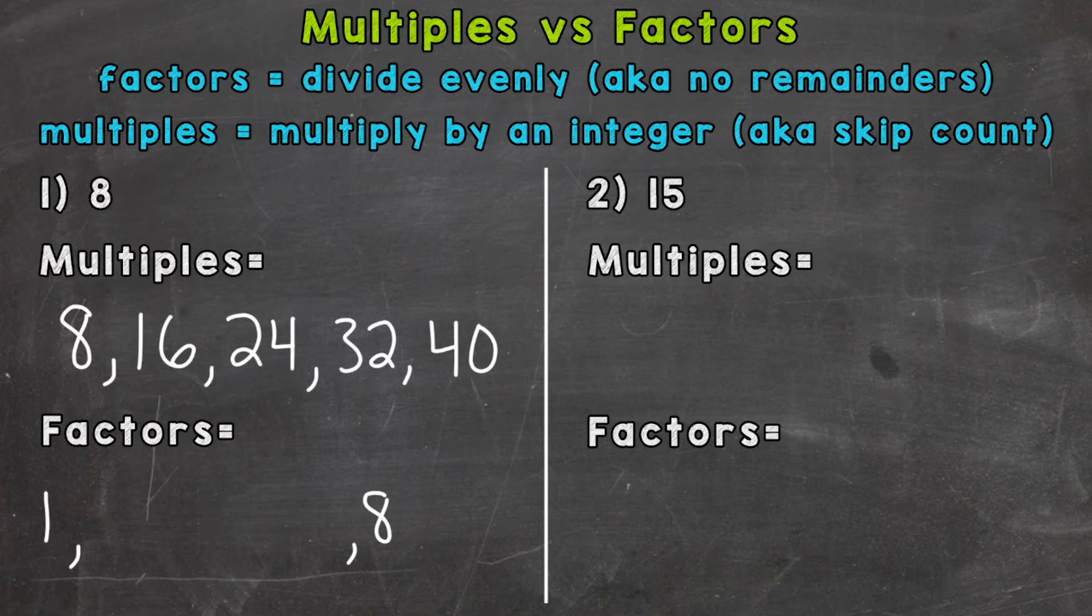Or you can think of it as one times eight equals eight. So all the math facts, all the multiplication facts that will equal eight. And we can think of this as a factor pair here. So we'll start with one and eight. And for some numbers, those are the only factors, one and the number itself. Those numbers are called prime numbers, but eight is composite. So it has other factors involved here.